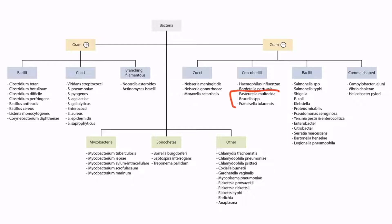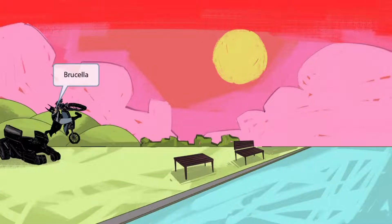Notice that we're combining these three into one video. To begin the story, notice that Batman is coming out of his Batmobile on a dirt bike. Even though he has his mask on, we all know that his real name is Bruce Wayne. Bruce sounds kind of like Brucella, which should help you remember that this part of the image is about Brucella.